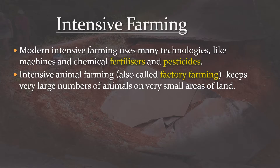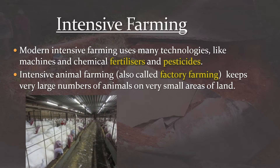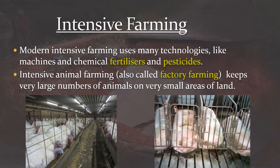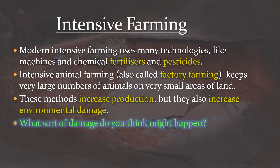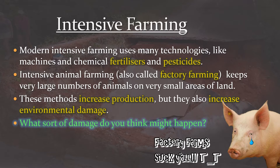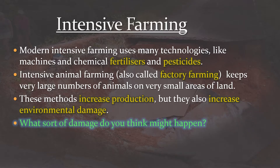Intensive animal farming is also called factory farming. We keep very large numbers of animals on very small areas of land, and we feed them in a mechanical way. This massively increases production, but it also leads to increased environmental damage, and in factory farming, animal welfare concerns. Just stop and think about what kinds of damage you think might happen to the land in these cases.